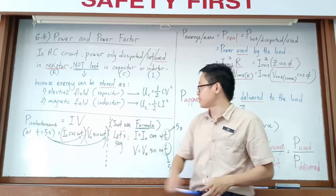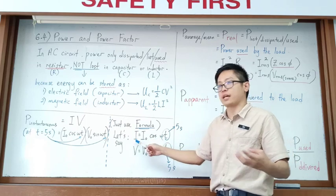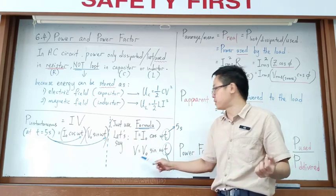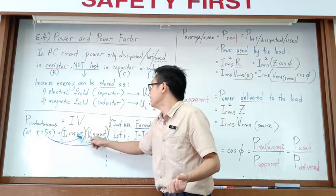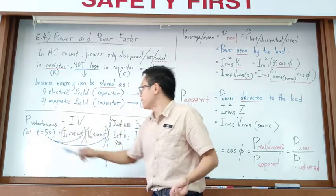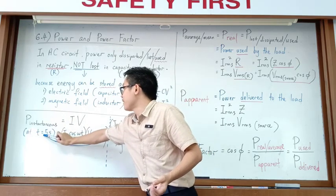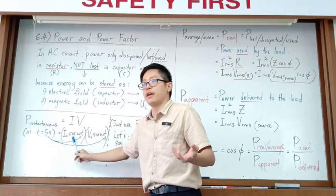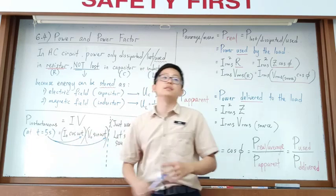If the current formula is I₀·cos(ωt) and the voltage formula is V₀·sin(ωt), substitute t = 5 seconds into each. Calculate the current at 5 seconds, calculate the voltage at 5 seconds, then multiply them together to get the instantaneous power.